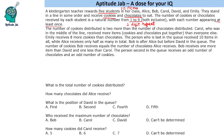Further, we are given that the number of cookies distributed is two more than the number of chocolates distributed. Carol was in the middle of the line, so we are given positions as well. We need to find the number of cookies and chocolates and the positions of these people.